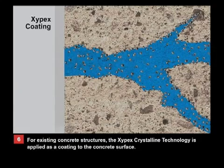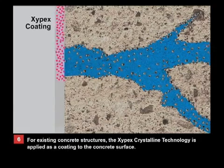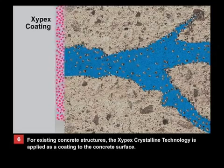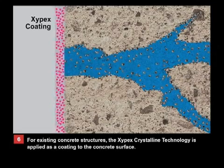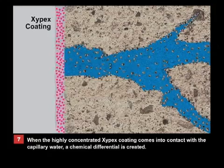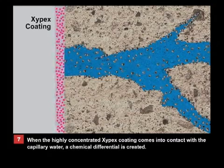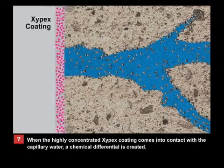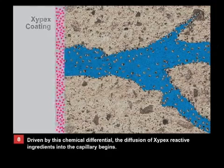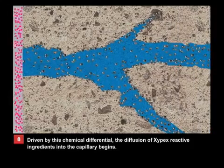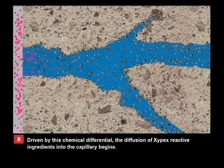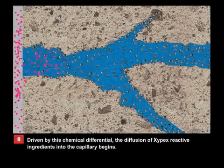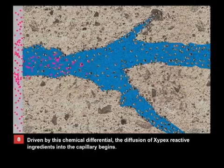For existing concrete structures, the Xypex crystalline technology is applied as a coating to the concrete surface. When the highly concentrated Xypex coating comes into contact with the capillary water, a chemical differential is created. Driven by this chemical differential, the diffusion of Xypex reactive ingredients into the capillary begins.